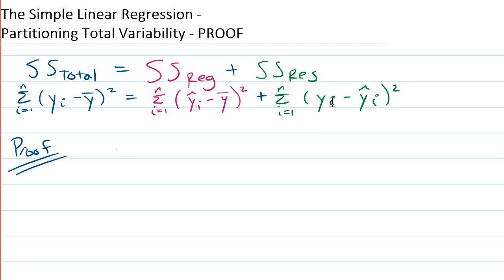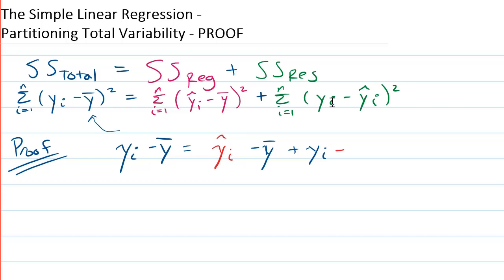To start off this proof, let me begin with y_i minus y-bar, which is the left-hand side of this equation. This is the same thing as negative y-bar plus y_i. Now I can include y-hat_i at the front, but if I include y-hat_i at the front, I have to subtract it off in the back. So I've added and subtracted the same number. I can put parentheses around these terms without changing the equation.